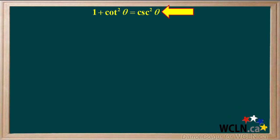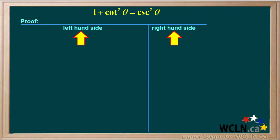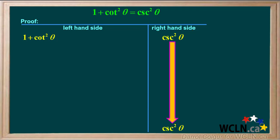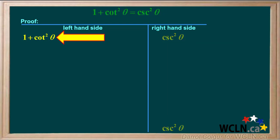Now we'll prove the identity 1 plus cotangent squared theta equals cosecant squared theta. We'll add a table. The expression on the left is 1 plus cotangent squared theta, and the expression on the right is cosecant squared theta. We'll rewrite cosecant squared theta at the bottom of the right side. Now we'll work through the expression on the left: 1 plus cotangent squared theta.